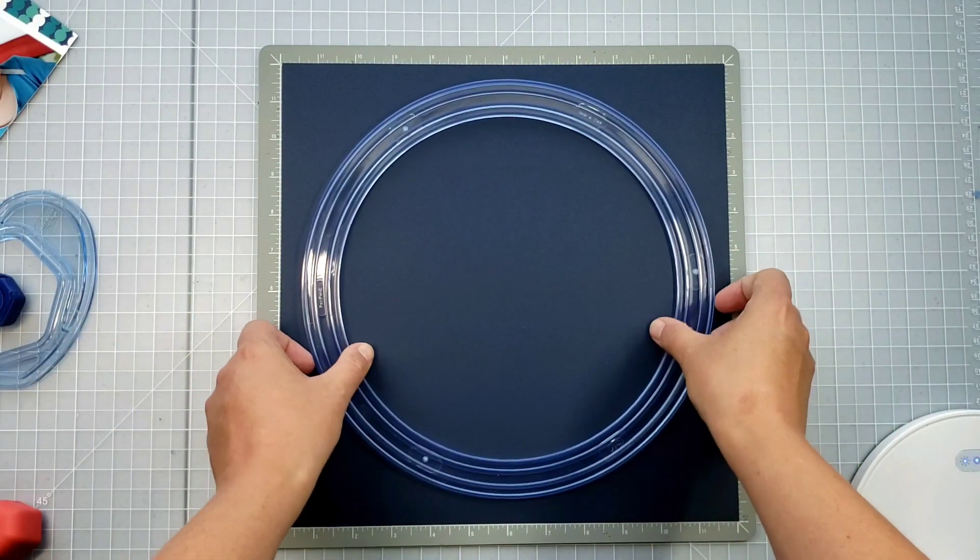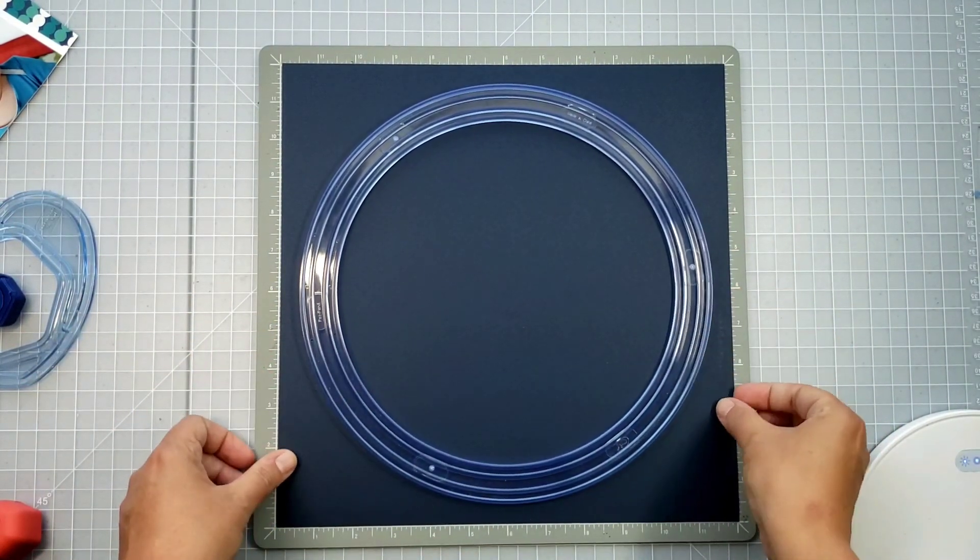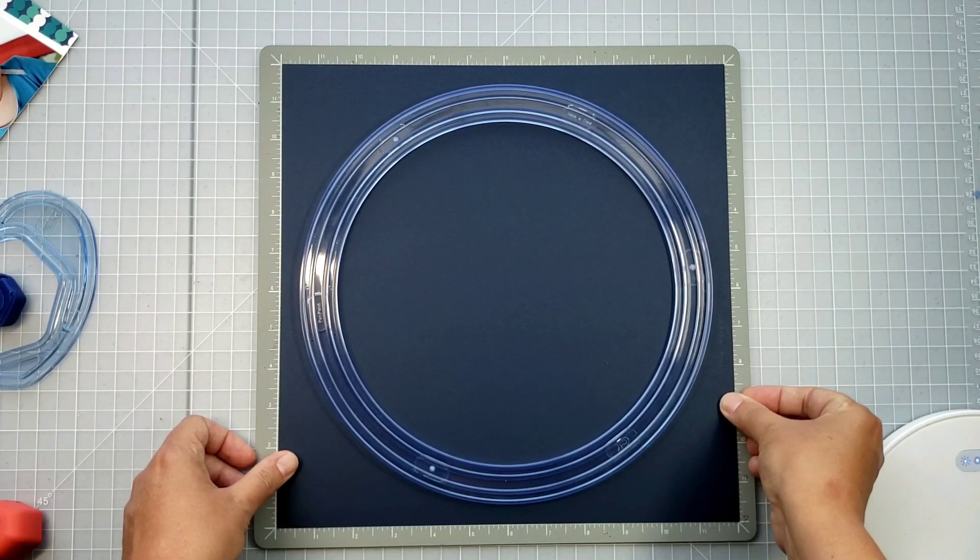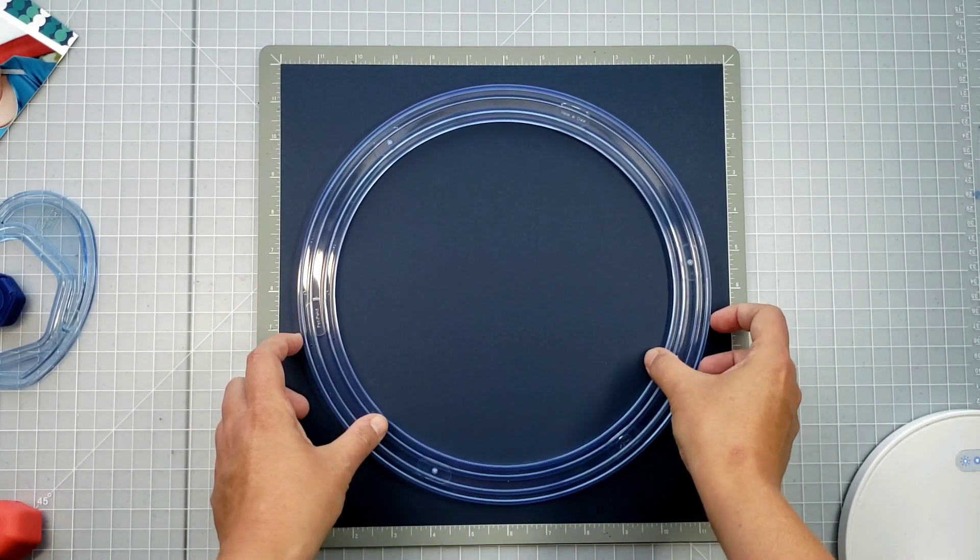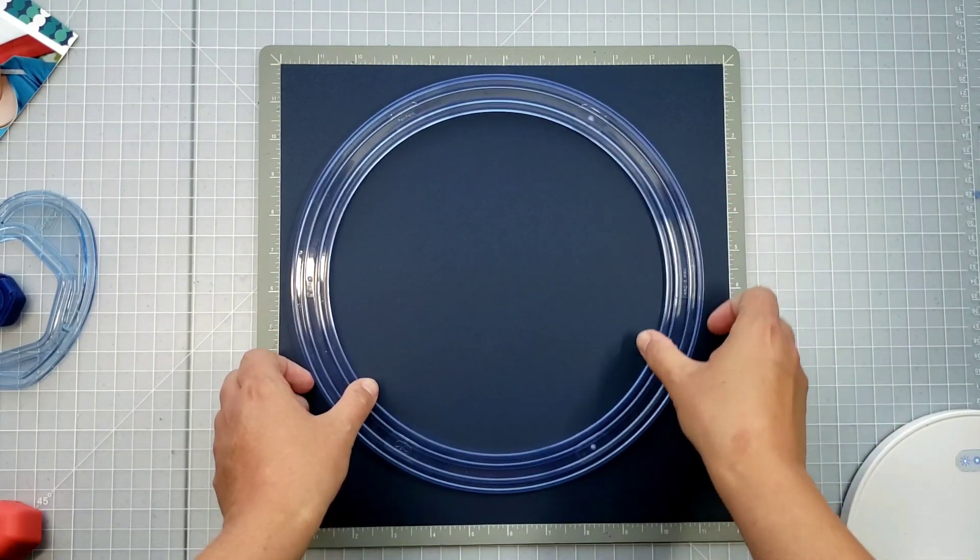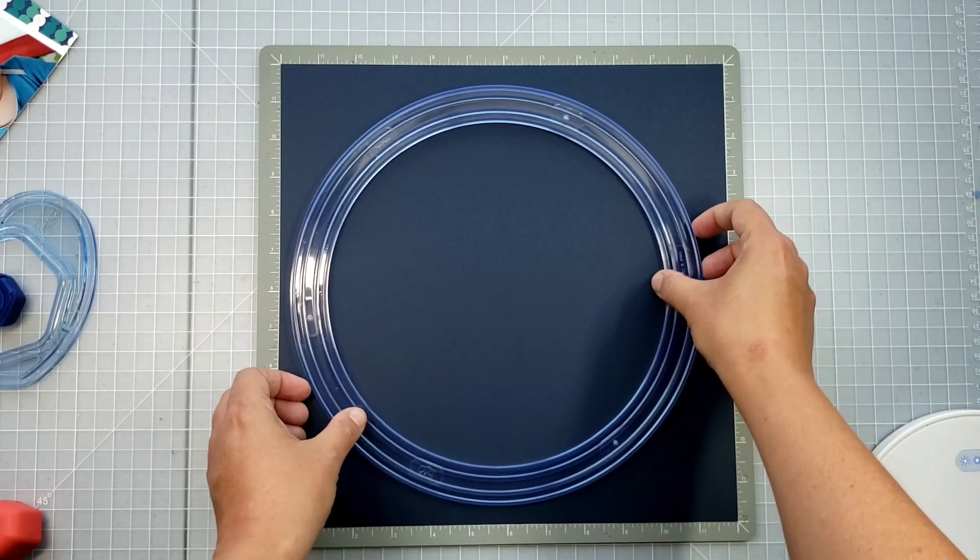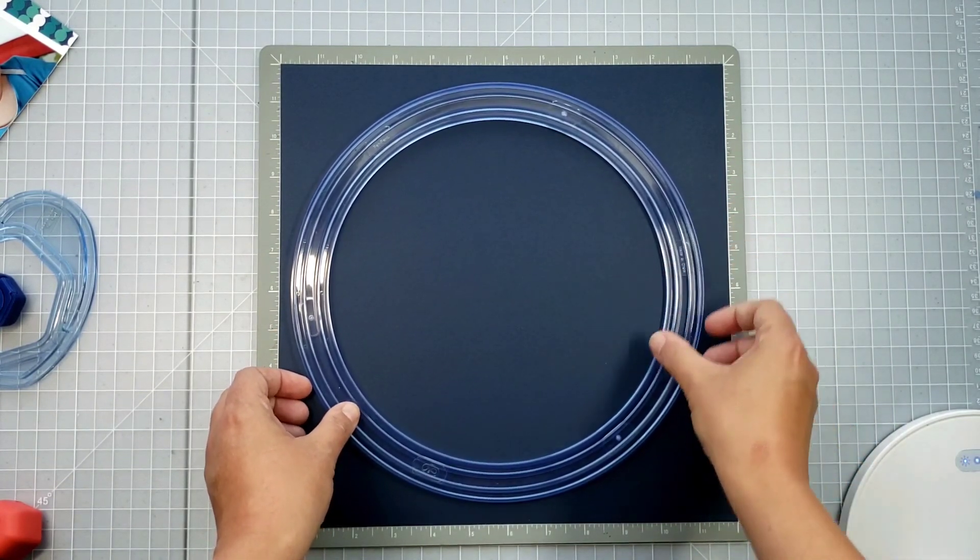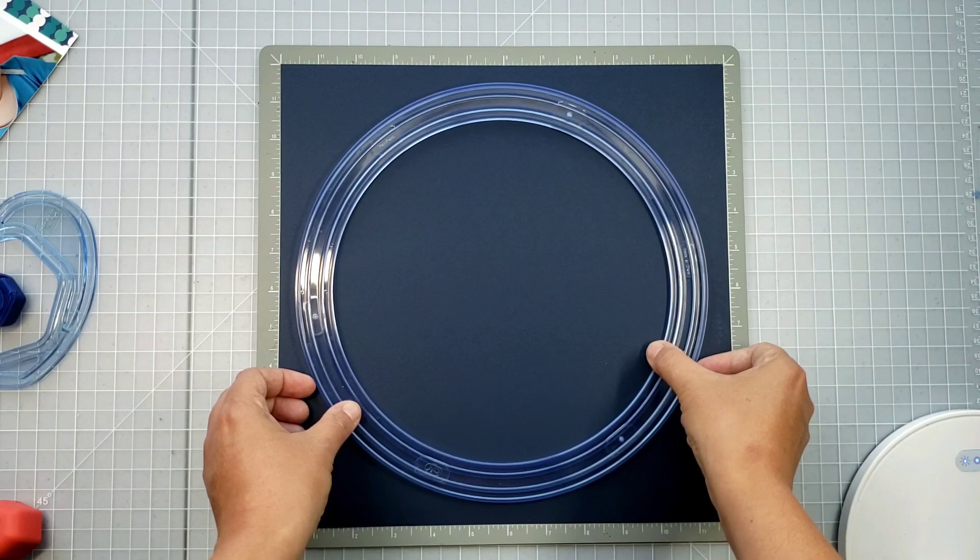So what I'm going to do here is I'm going to center my cardstock on my mat and then I'm going to center my Jumbo Circle on my cutting mat. The reason I'm taking the time to center it is because I'm using a full sheet of paper.